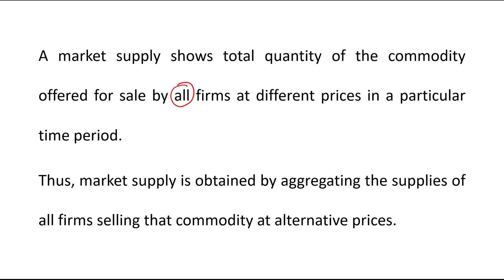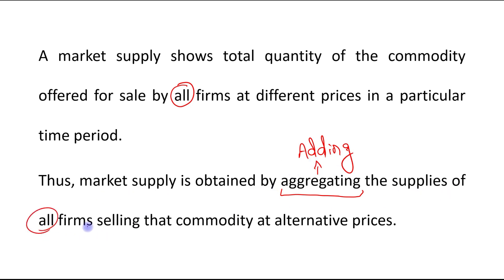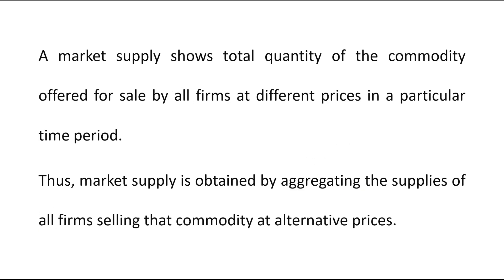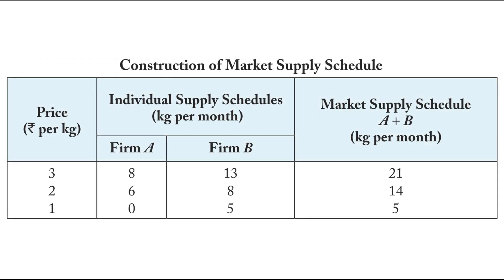Market supply is obtained by aggregating — meaning adding — the supplies of all the firms selling that commodity at alternative prices. Here we have a hypothetical market supply schedule. The first column is price in rupees per kg, and the second column is individual supply schedules in kg per month.